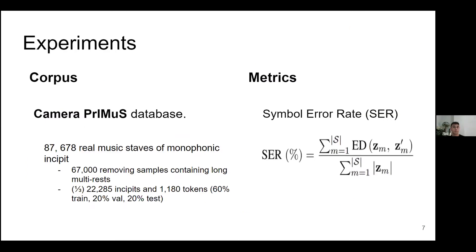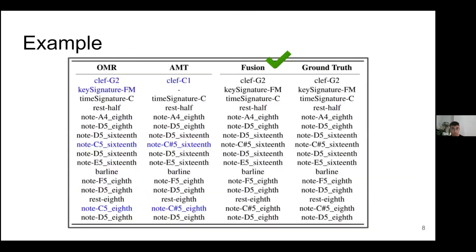About our experimentations for the evaluation of our approach, we consider the Camera Primos database. We have 87,000 samples and at the end we only use 22,000 samples - 60% for training, 20% for validation, and 20% for testing. And the metric that we used was symbol error rate. Here we have an example.